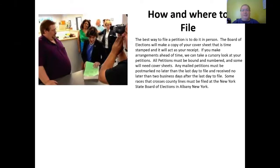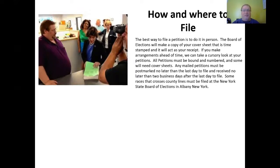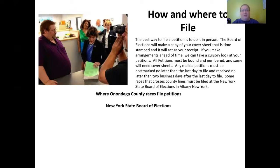How and where to file. The best way to file a petition is to do it in person. The Board of Elections will make a copy of your cover sheet that is time-stamped and that will act as your receipt. If you make arrangements ahead of time, we can take a cursory look at your petitions. All petitions must be bound and numbered and some will need cover sheets. Any mail petitions must be postmarked no later than the last day to file and received no later than two business days after the last day to file. Some races that cross county lines must be filed at the New York State Board of Elections in Albany, New York, which is open till 5 p.m. every day.